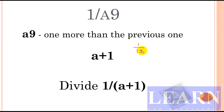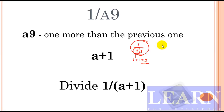For example, if the given number is 1 divided by 19, we look at the previous digit. Ekadhikena Purvena says 'one more than the previous one.' The previous digit of 9 in 19 is 1, so one more than 1 is 1+1 = 2. So instead of dividing 1 by 19, we divide 1 by 2, which is much simpler.